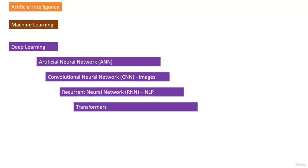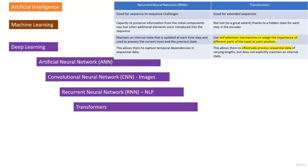ChatGPT is based on transformers. The difference between RNNs and transformers is that RNNs were very good for sequence-to-sequence challenges, but not very good for extended sequences because the capacity to preserve information from the initial component was lost. Transformers are good for extended challenges — past information is not lost. Transformers use a self-attention mechanism to weigh the relative importance of different parts of the input, allowing them to process sequential data effectively.